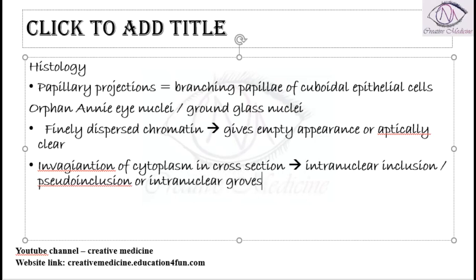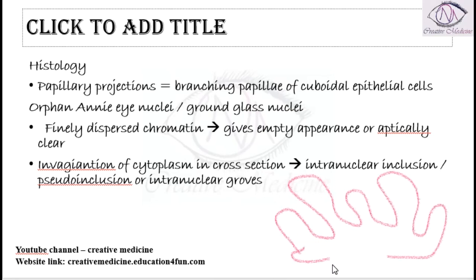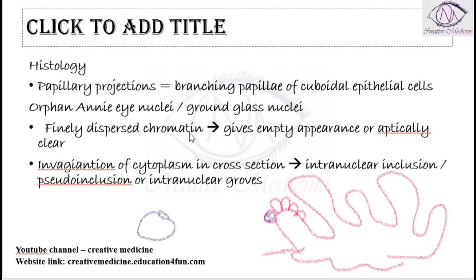If we draw a diagram, the Orphan Annie nuclei will mainly show branching papillary appearance on histology. In the cells you will see the Orphan Annie nuclei giving an empty appearance with grooves, because of finely dispersed chromatin. You will also see invagination of the cytoplasm giving rise to intranuclear inclusions, pseudo inclusions, or intranuclear grooves.